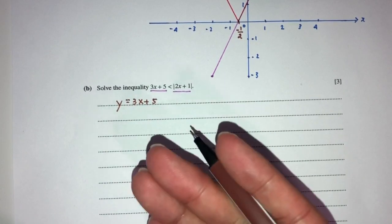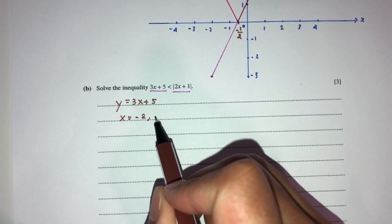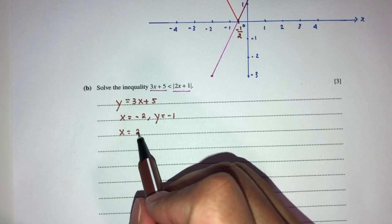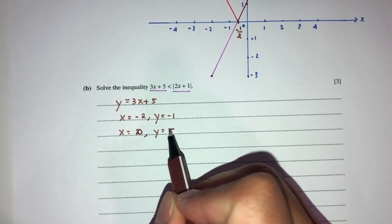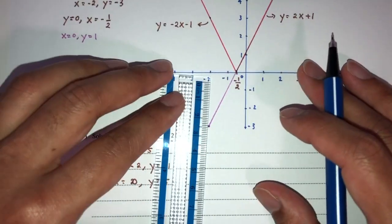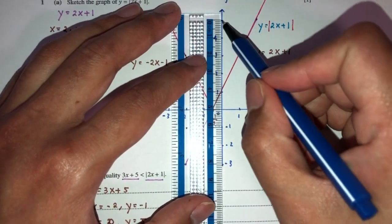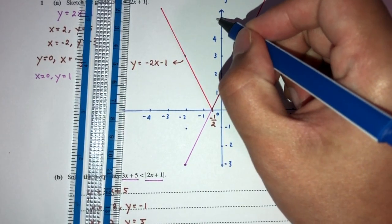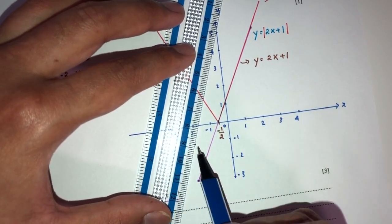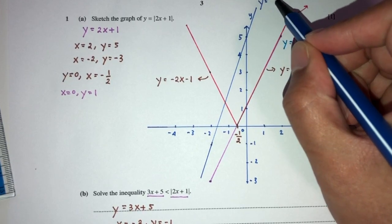Now let's try to sketch y equals 3x plus 5. If x equals minus 2, the value of y is minus 1. If x equals 0, we find the intercept: y will be 5. So let's use these two points to sketch this graph. The point (minus 2, minus 1) should be right here, and (0, 5) should be right here. I'm using the graph method so we can show exactly what's happening.